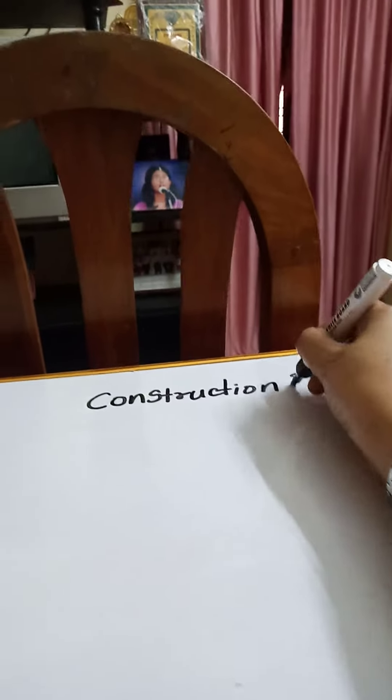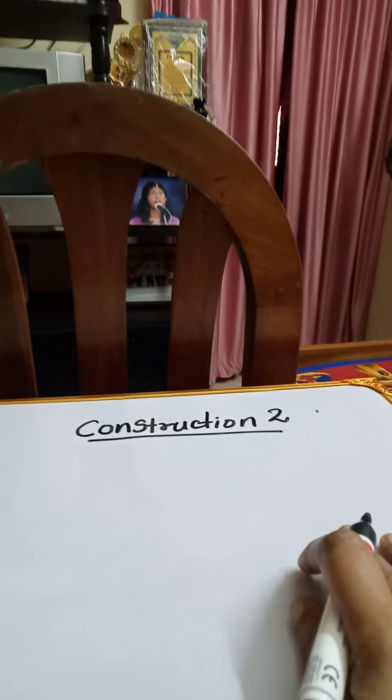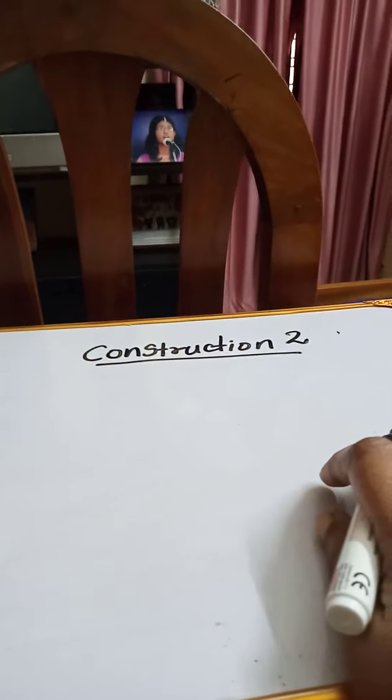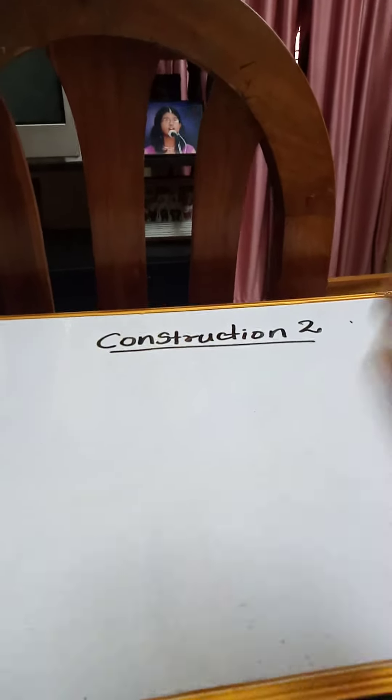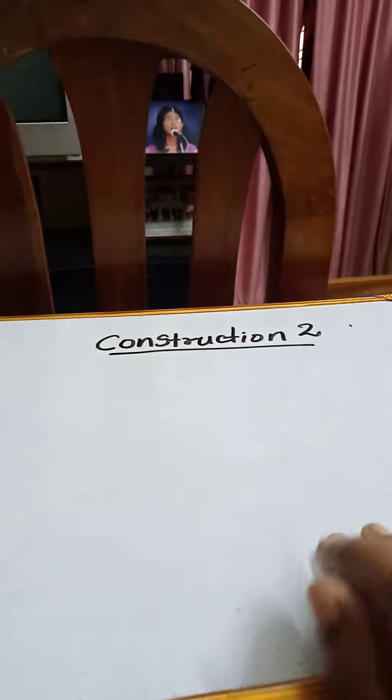Next construction, construction number two. This is also a construction about the tangent: how to draw a tangent from one circle to another circle if they are concentric circles.